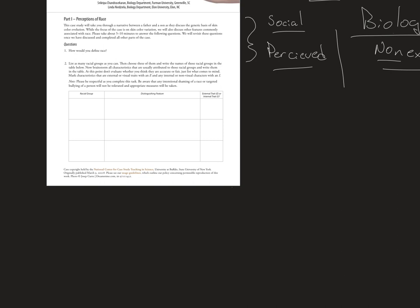Now if you took a racial group and started listing distinguishing features — let's say dark skin, light skin, or medium skin — even looking at skin color alone, this is insufficient, since there's no such thing as really dark, light, or medium. There are all kinds of gradations in between.